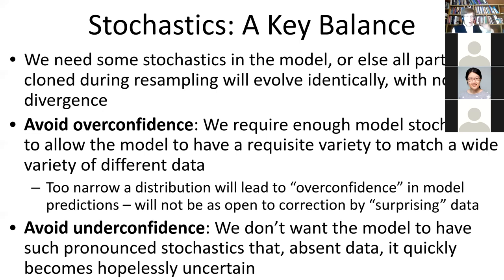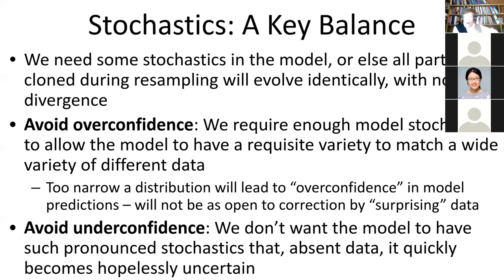This is both a philosophical and very practical point for tuning these models. If a model is overconfident, it will have very narrow distributions — not enough stochastics to give it requisite variety. So if it sees empirical data that's off, it won't be able to fully take advantage of it. It won't materially adjust because it has such a narrow set of possibilities — it'll nudge just a little, but won't be able to respond to surprise data like an unexpected outbreak.